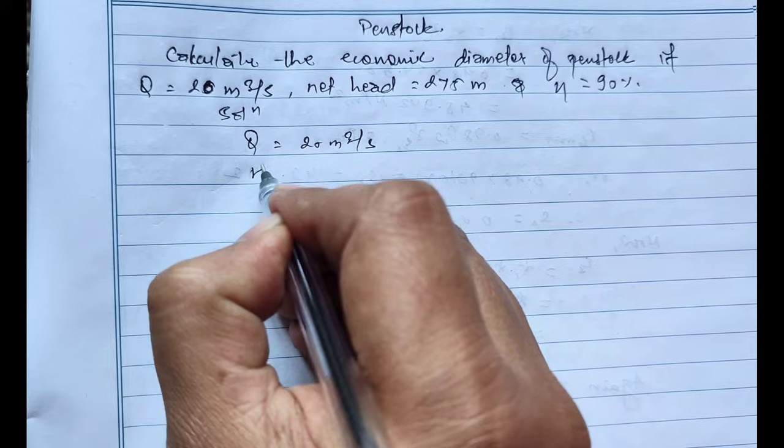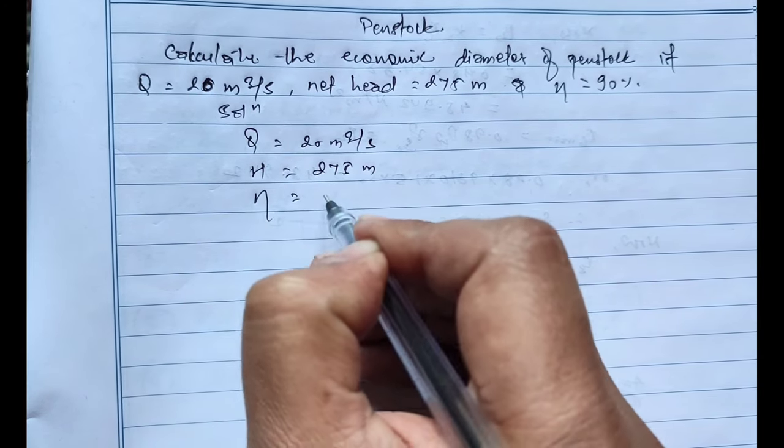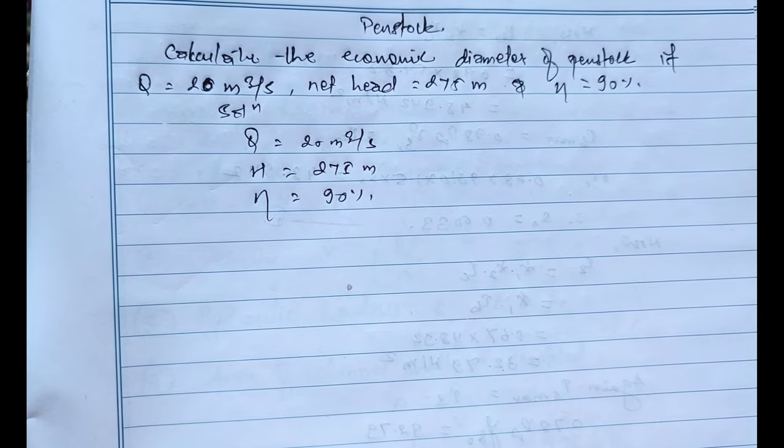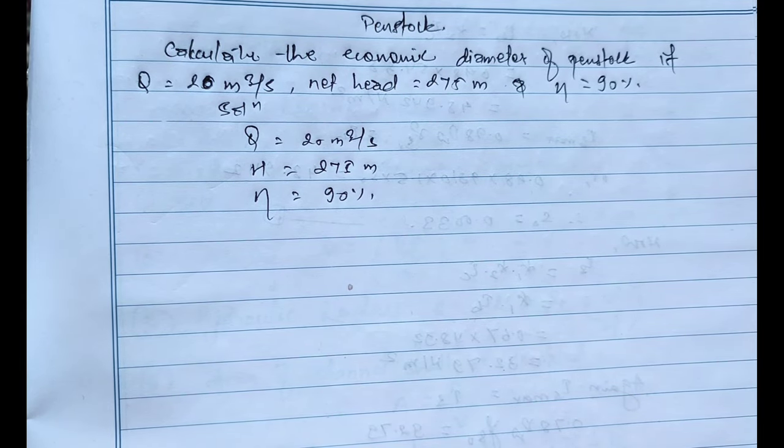And overall efficiency equals 90%. The economic diameter of the penstock can be found out by using JNN guidelines, USBR formula, and using Sarkaria formula.